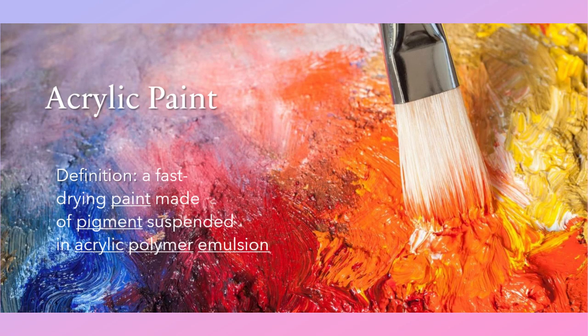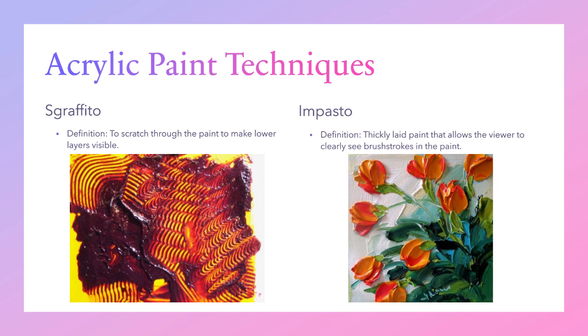Acrylic paint is a fast-drying paint made of pigment suspended in acrylic polymer emulsion — hence called acrylic paint. Acrylic paint techniques we learned are sgraffito and impasto.